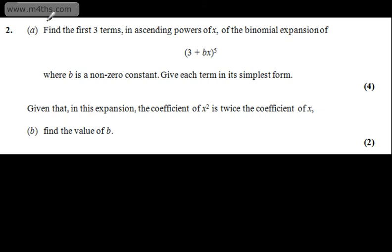This is question number 2. In part A for four marks, we're asked to find the first three terms in ascending powers of x of the binomial expansion of 3 plus bx to the 5th, where b is a non-zero constant. We're asked to give each term in its simplest form.